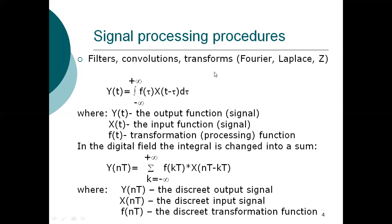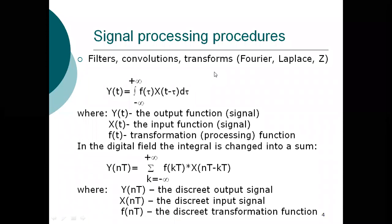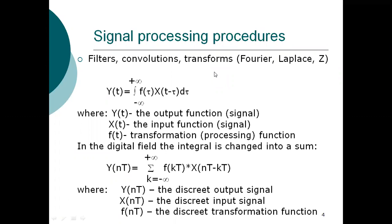Adding five hertz to the input signal gives the output ten hertz of frequency. Upon integrating it will be increasing; upon differentiating it increases to a slighter range, upon integration it increases further. In the residual field the integration changes into a sum, and hence the formulation is: y(m) of n = f(kn) into x(n minus kn). Here y(n) is the discrete output signal, x(n) is the discrete input signal, and f(n) is the discrete transformation function.